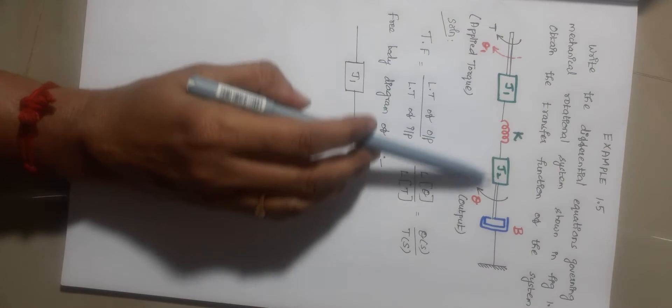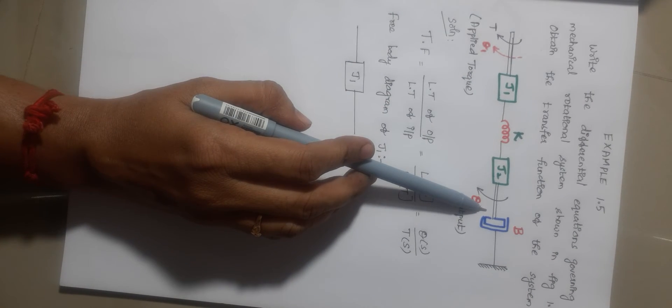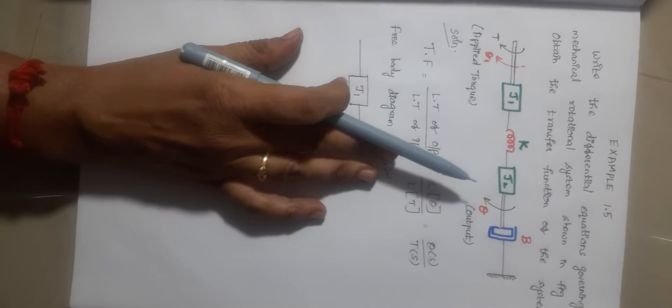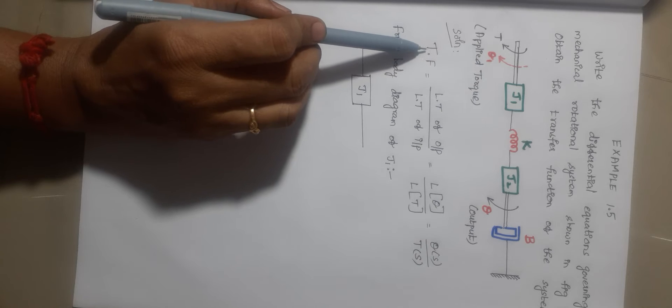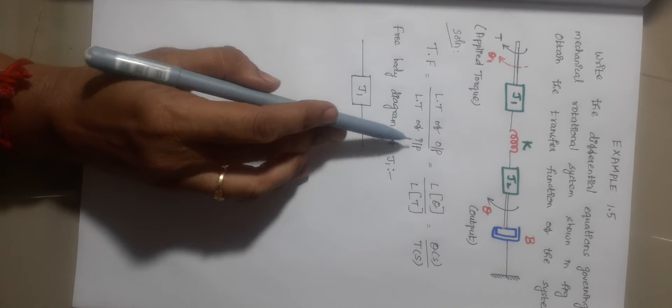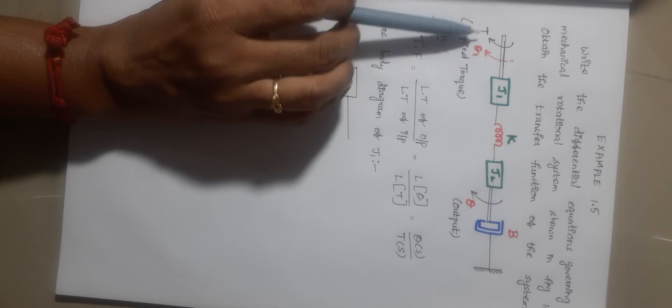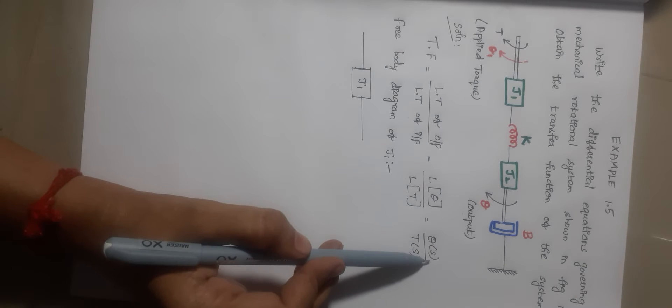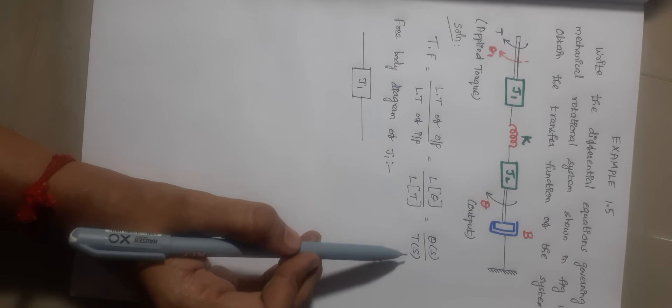From the diagram we have two masses with moment of inertia J1 and J2. The first step to find the transfer function uses the formula: Laplace transform of output divided by Laplace transform of input. From the diagram, T is the applied torque (the input) and theta is the respective output. So the transfer function is theta(S) divided by T(S).